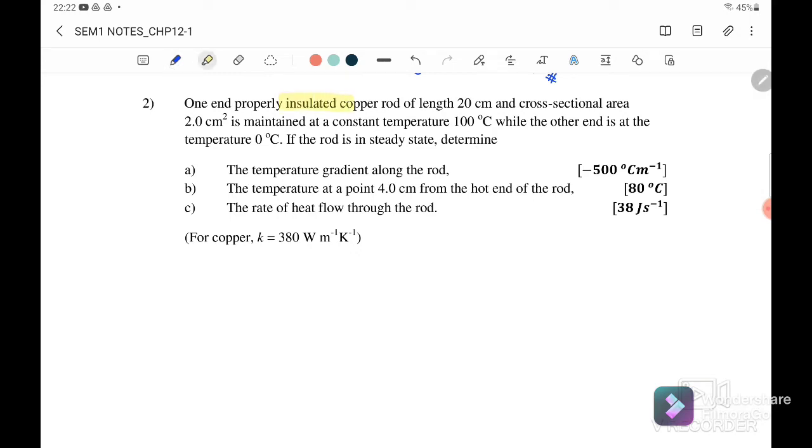Question 2: One end of a properly insulated copper rod of length 20 cm and cross-sectional area 2.0 cm² is maintained at a constant temperature 100°C while the other end is at 0°C. If the rod is in steady state, determine...